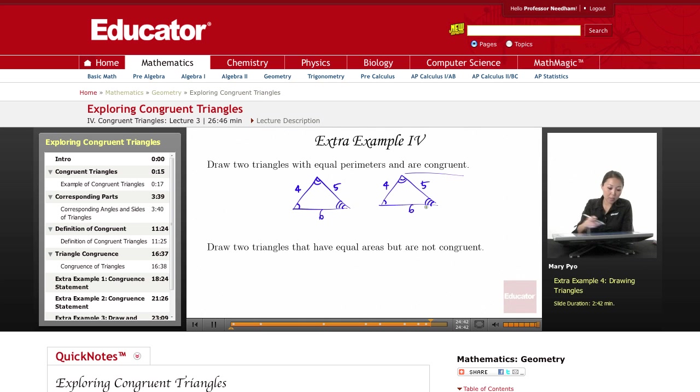And then the corresponding angles would be congruent. So in this case, they're going to have the same perimeter because perimeter, remember, we add up all the sides. So 4 plus 5 plus 6 is going to be the same as 4 plus 5 plus 6.